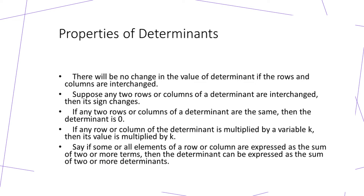Having discussed the simplification of determinants, let's understand the properties of determinants. There will be no change in the value of the determinant if you interchange the rows or columns. If any two rows or columns of a determinant are interchanged, then its sign would change but the actual number remains the same. If any two rows or columns of a determinant are the same, then the value of the determinant will be zero.